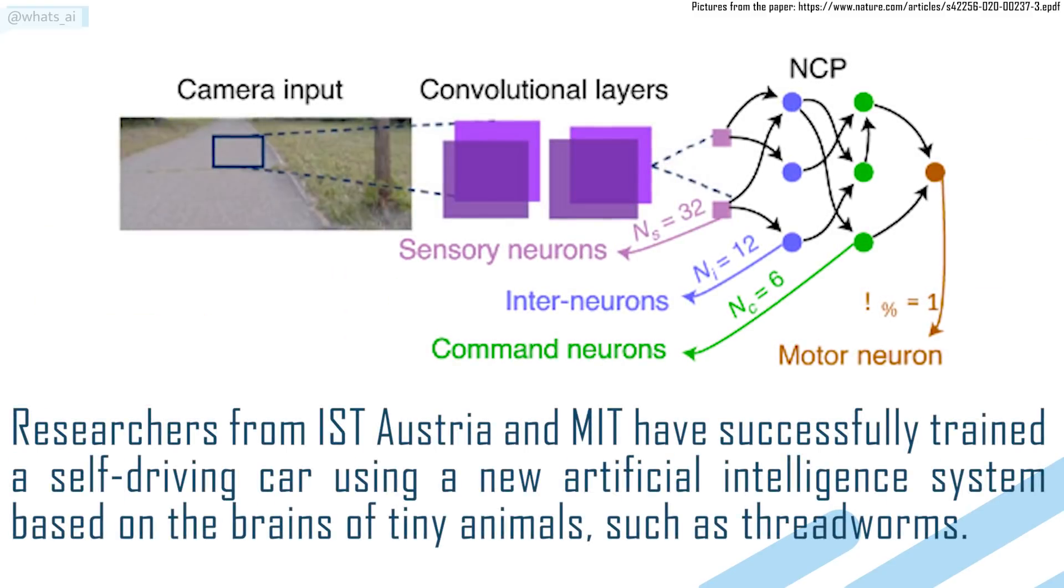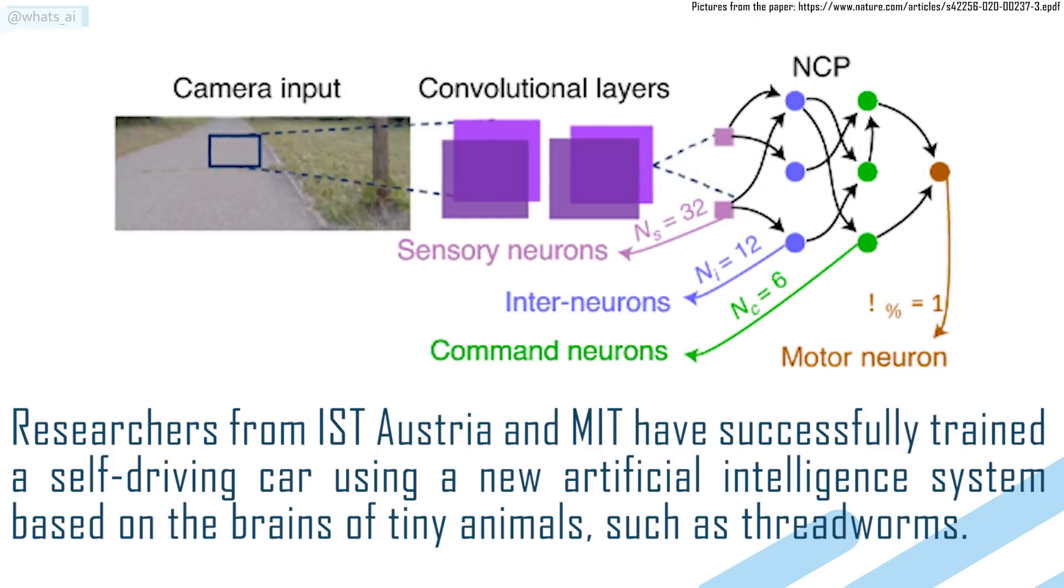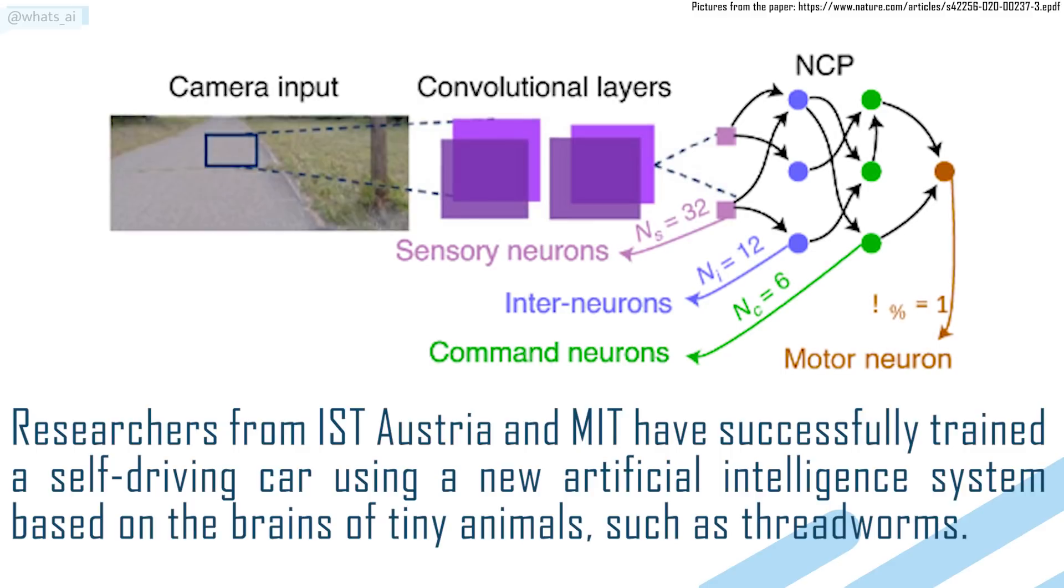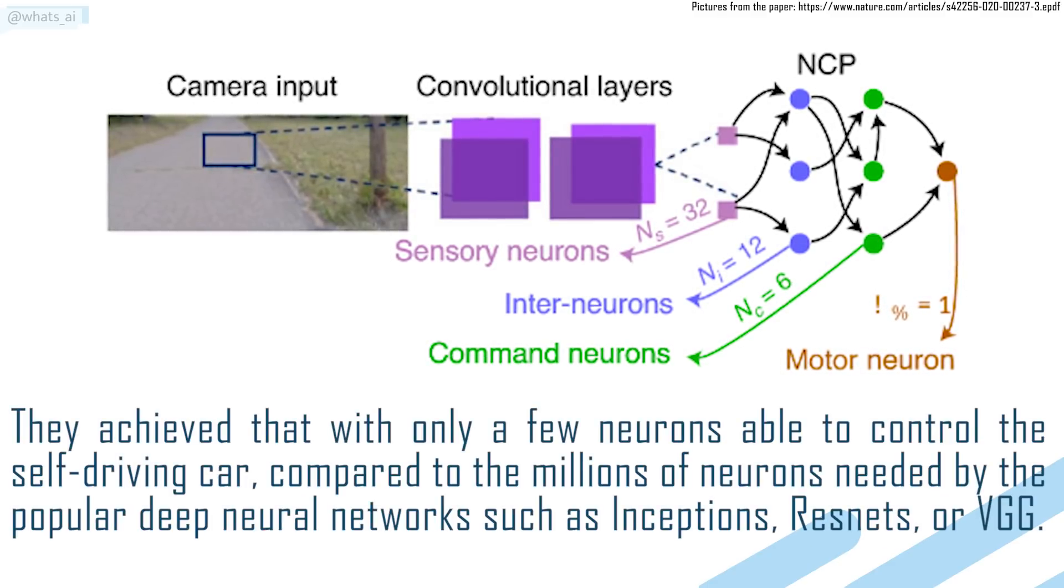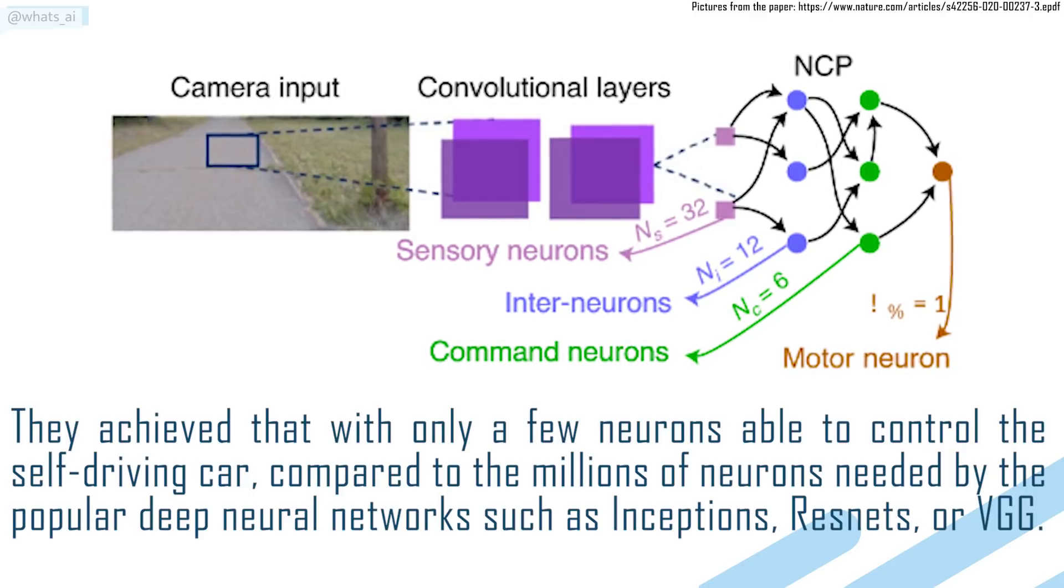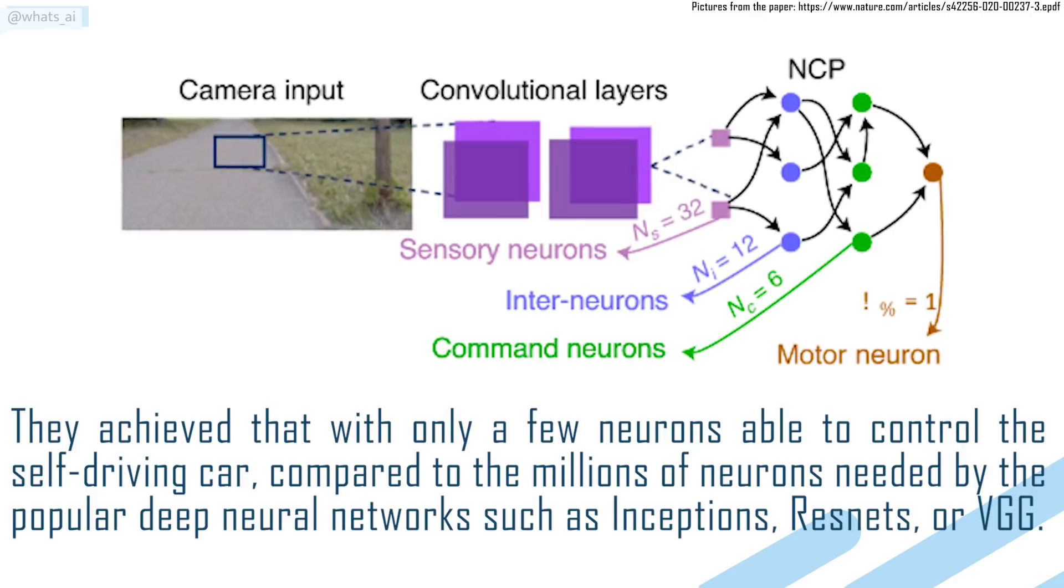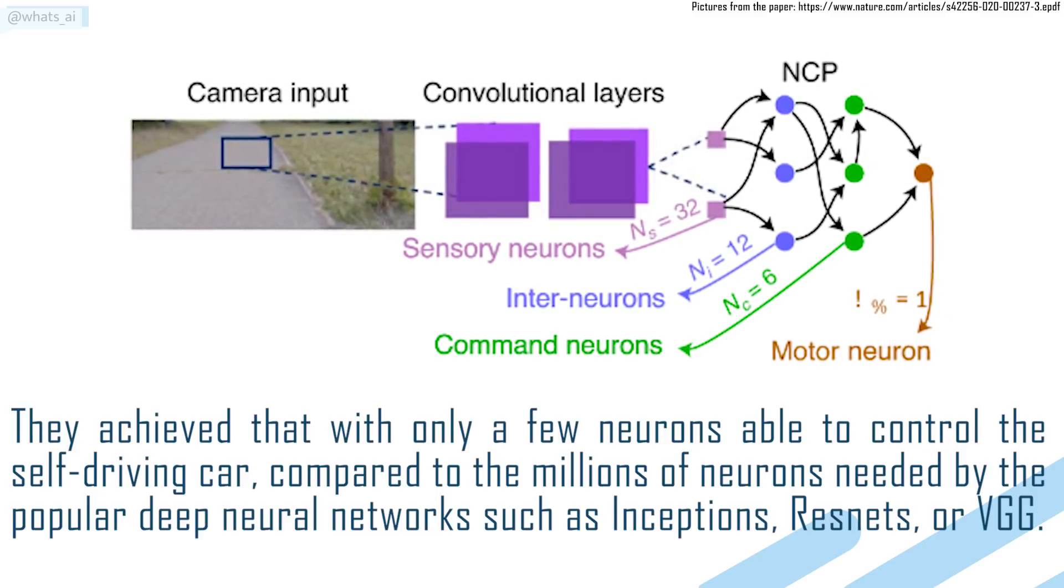Researchers from IST Austria and MIT have successfully trained a self-driving car using a new artificial intelligence system based on the brain of tiny animals, such as threadworms. They achieved that with only a few neurons able to control the self-driving car compared to the millions of neurons needed by the popular deep neural networks such as Inceptions, Resnets or VGG.